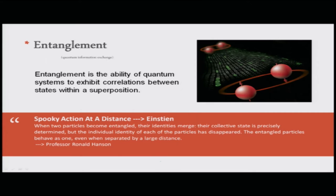The key quantum phenomenon utilized is entanglement, the quantum information exchange mechanism. Entanglement is the ability of quantum systems to exhibit correlations between states within the superposition — what Einstein called 'spooky action at a distance' in his famous EPR paradox. When two particles become entangled, their collective state is precisely determined but individual identities disappear; they behave as one even when separated by large distances, so measuring one automatically determines the other.